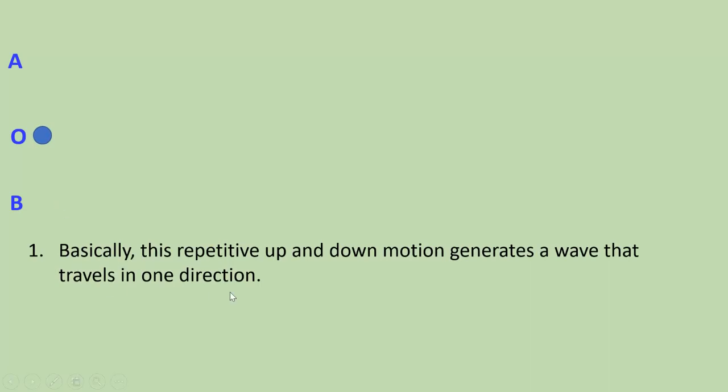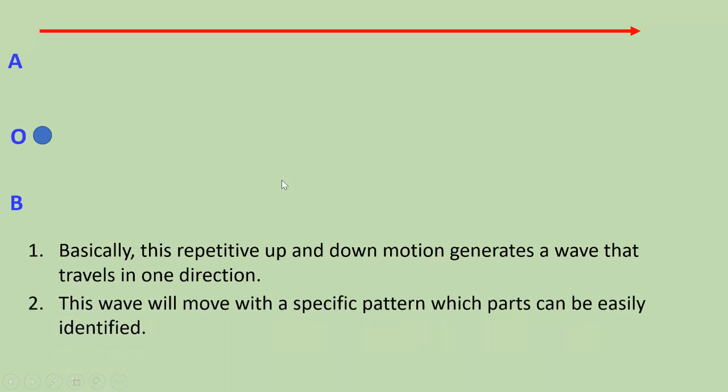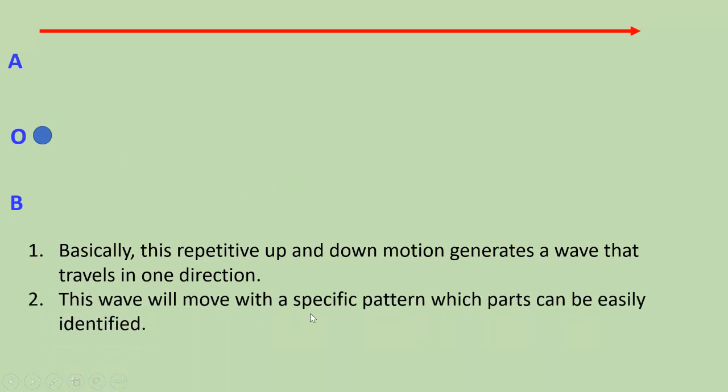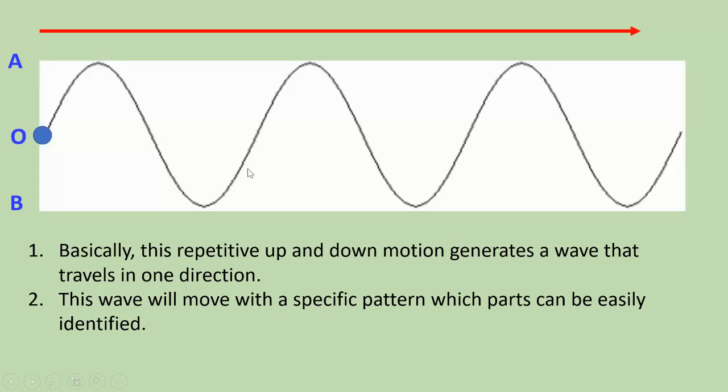Basically, this repetitive up and down motion generates the wave that travels in one direction. So that's the direction that we are going to draw a wave that is going to represent this periodic motion. This wave will move with a specific pattern which parts can be easily identified.